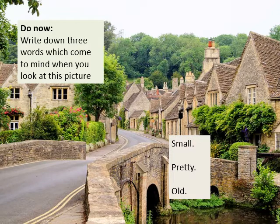Here are three that I've done: small, because it's a small village; pretty, it's nice looking; and old — all those houses look very old. Those are just my three. I'm sure you've got different ones.